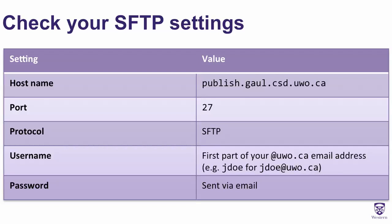If you're positive that you're entering the correct password, make sure you check your SFTP settings. The hostname you're entering should be publish.gall.csd.uwo.ca. The port should be port 27 and the protocol should be SFTP — not SCP, not FTP — it should be SFTP. Your username is the first part of your at uwo.ca email address. So if your email address is jdoe@uwo.ca, then your username is jdoe, and your password is sent to you via email and you can retrieve it if necessary.